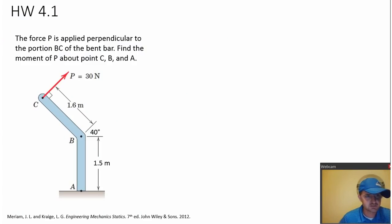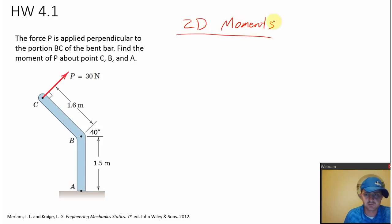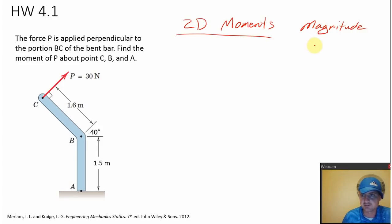This problem that we're going to look at in this video is a problem over 2D moments. So moments in 2D — what do we know about a moment in 2D? You already know that the magnitude of a moment in 2D is F times D.